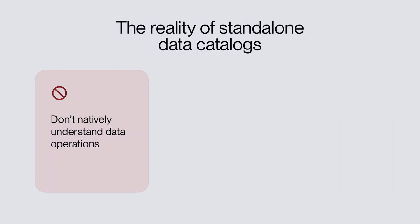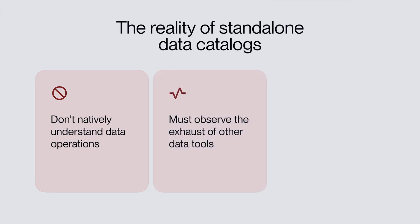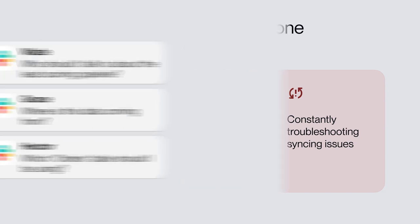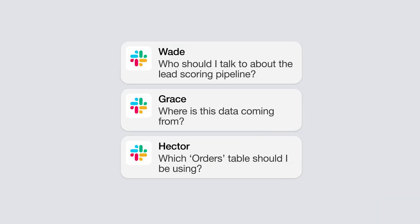Unfortunately, because standalone data catalogs don't have a native understanding of data operations, they have to create observations about the state of data assets from the exhaust of the loosely integrated tools that comprise the data platform. As a result, data engineering teams end up constantly troubleshooting problems of accuracy and timeliness in syncing the state of their data assets to the data catalog. All the while, they are trying to coax the rest of their stakeholders to follow a new set of development practices to ensure that it remains in sync. Typically, the end result is a lack of adoption from the very downstream stakeholders that the data team was trying to help.